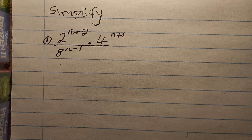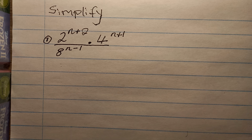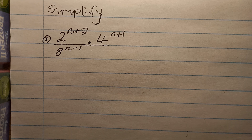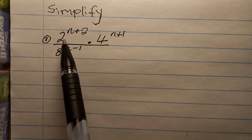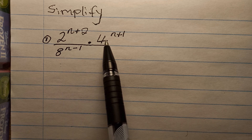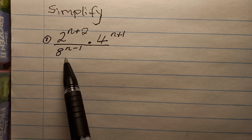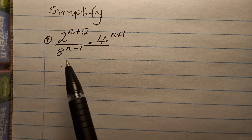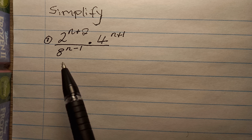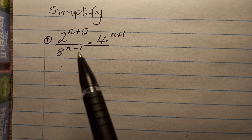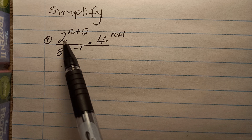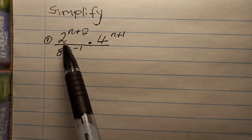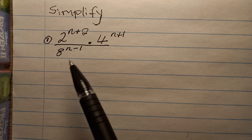Now, what you do when you are given a problem like this one: first of all, you can see that here you have got two, and then you have got four and eight at the bottom. What you need to do is make sure that we have a prime base. Our base here — we have got two, four, and eight.